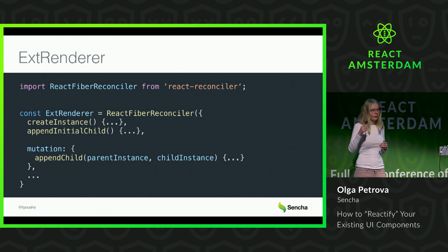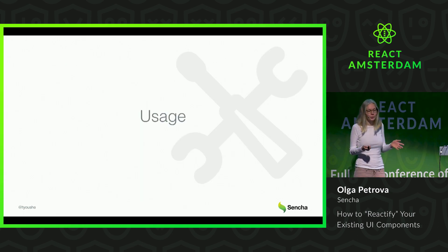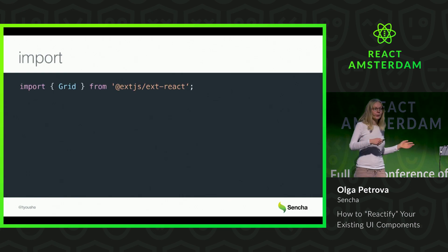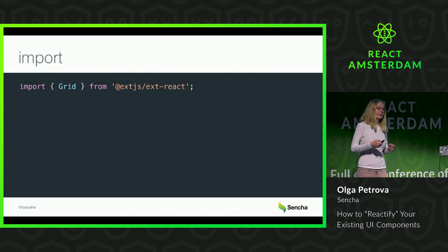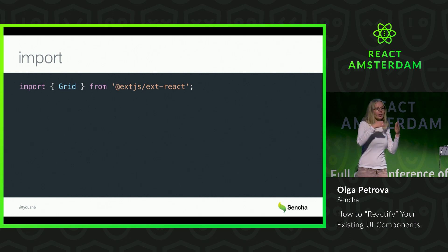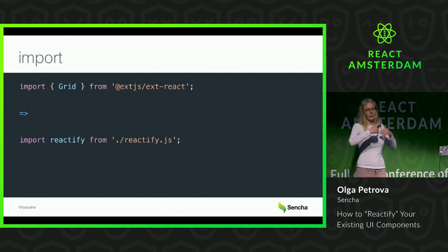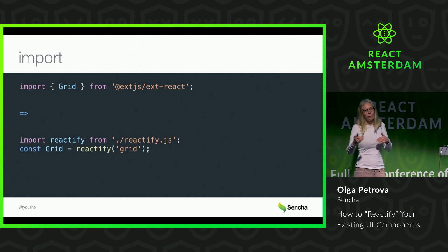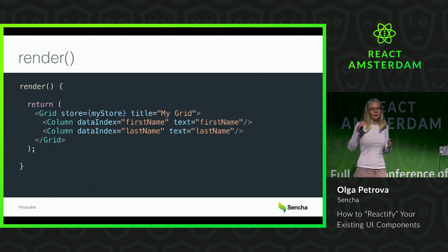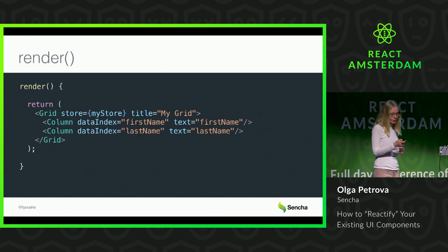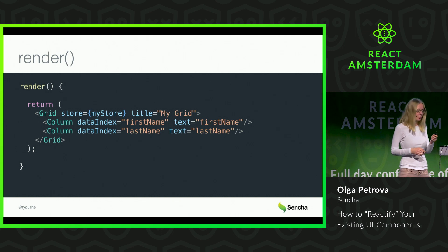How could you use your reactified components? First, you import any component — like Grid — from your package. The transpiler will transpile this into two lines: first importing the reactify function, then reactifying your Grid or any other component. After this, you just directly use the Grid or Column component in the render function. There is a simple example of a Grid with two columns.